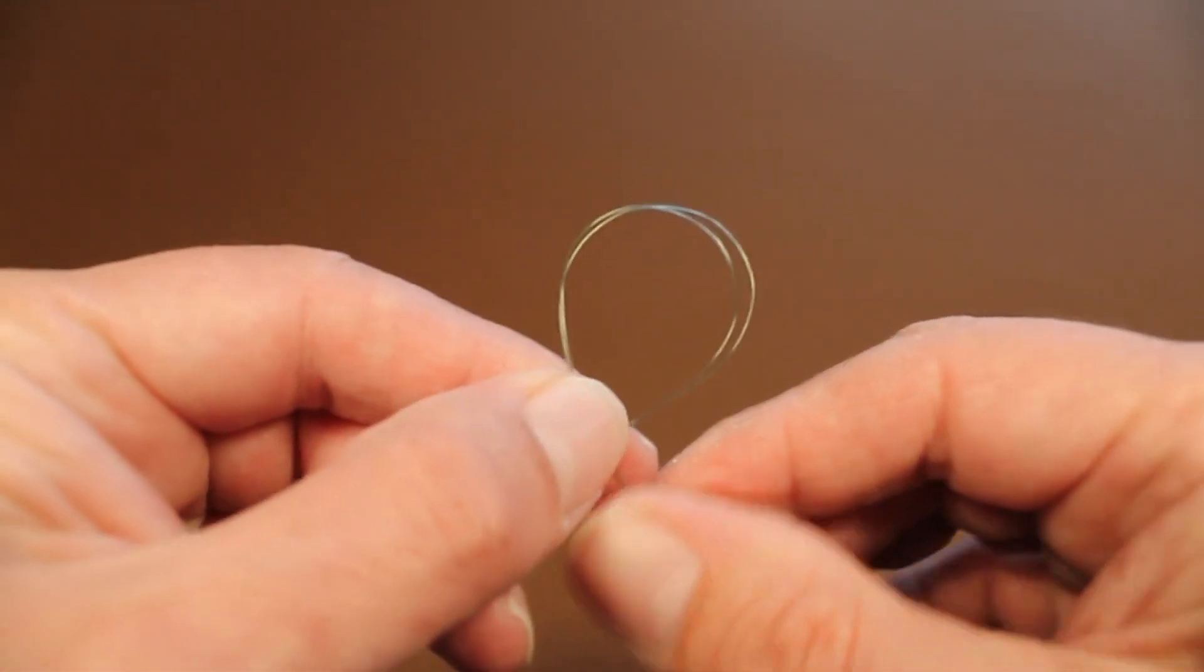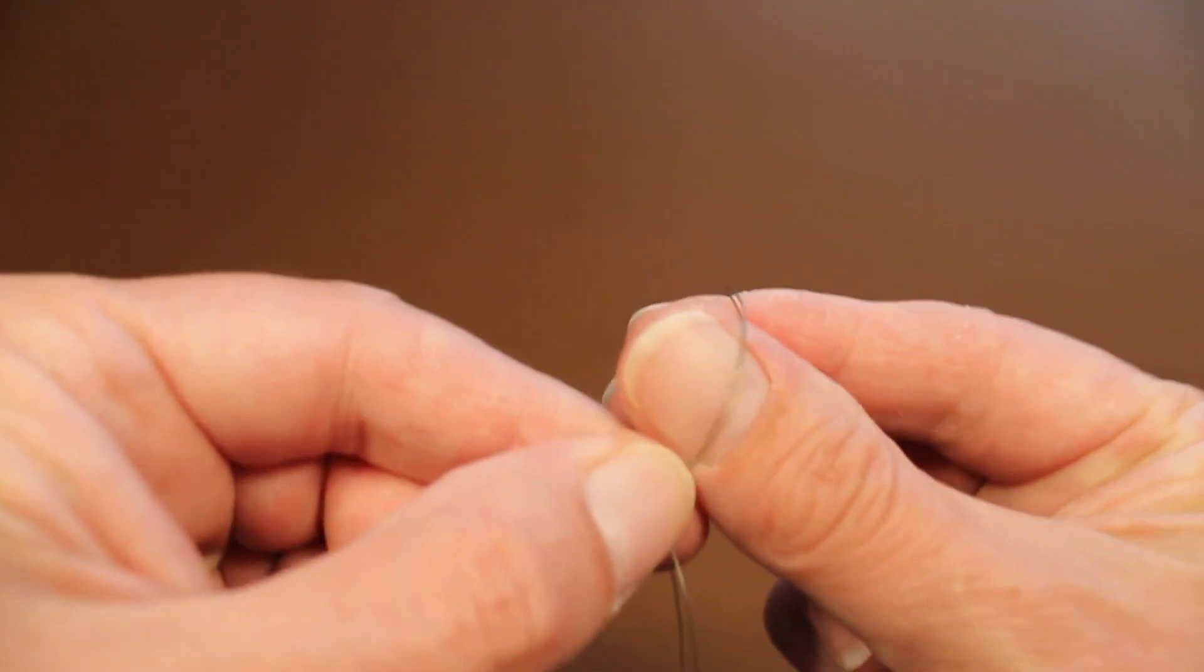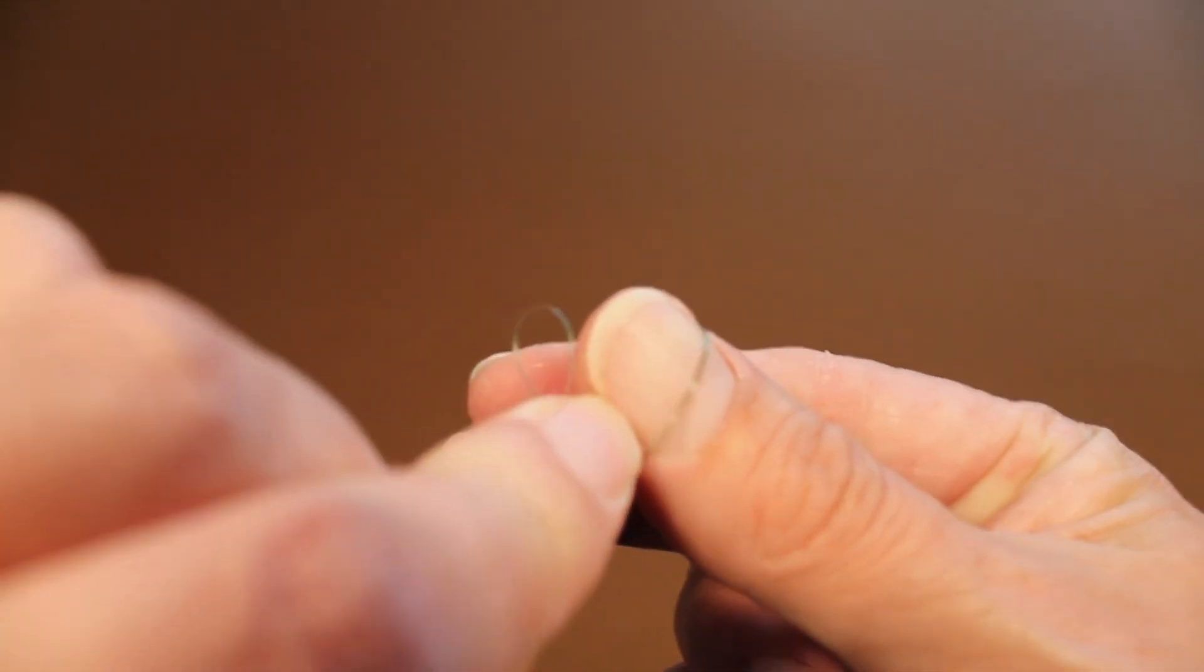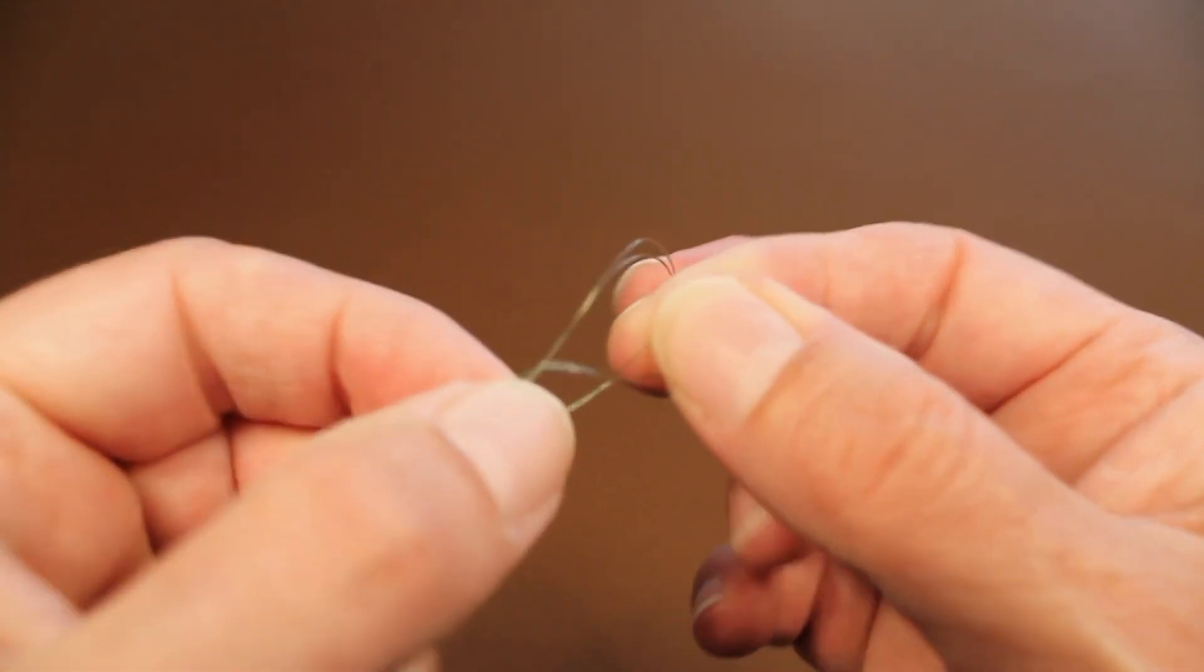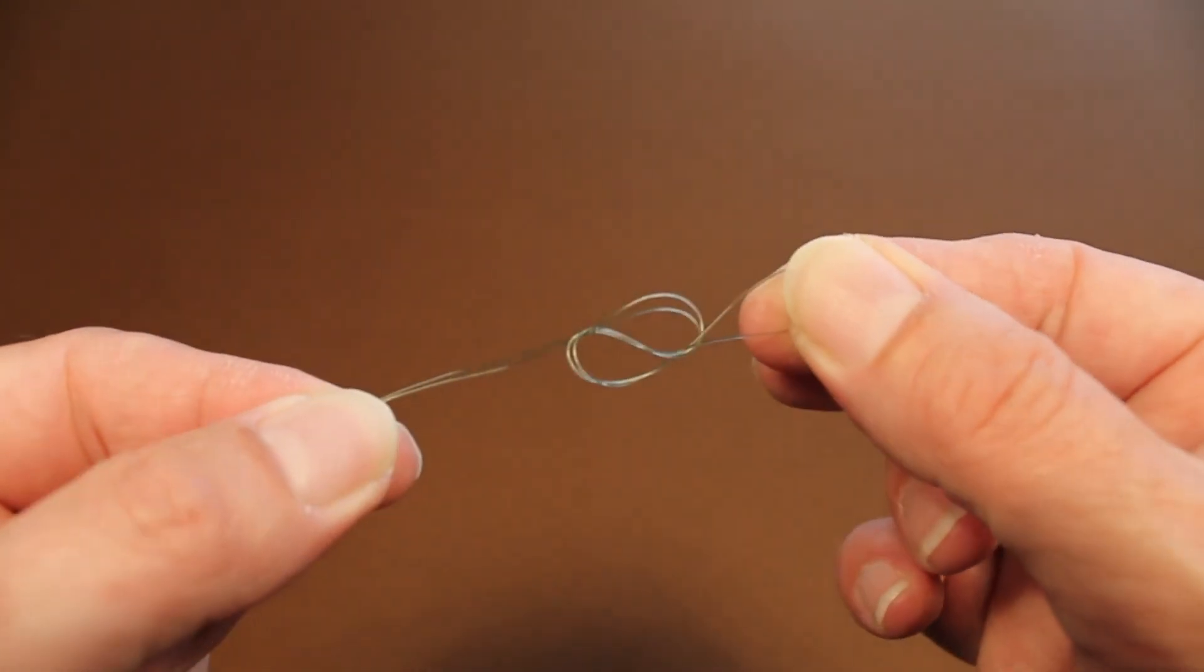Reach through the double loop, twist the single loop around the line and pull it through the double loop. You should see a figure of eight.